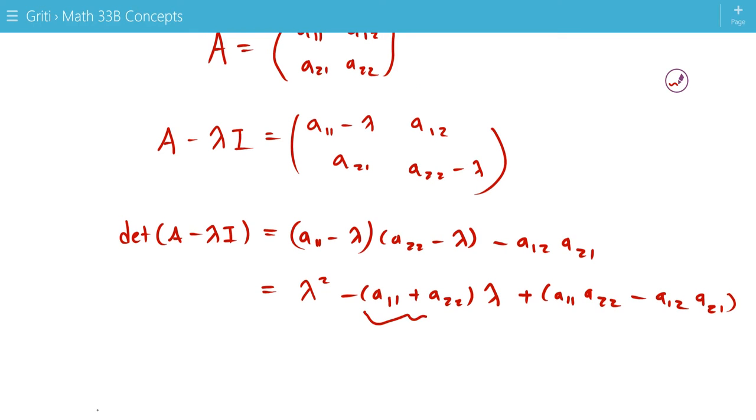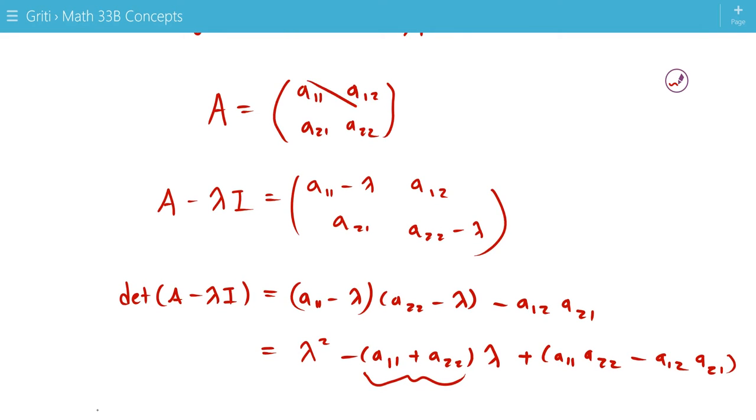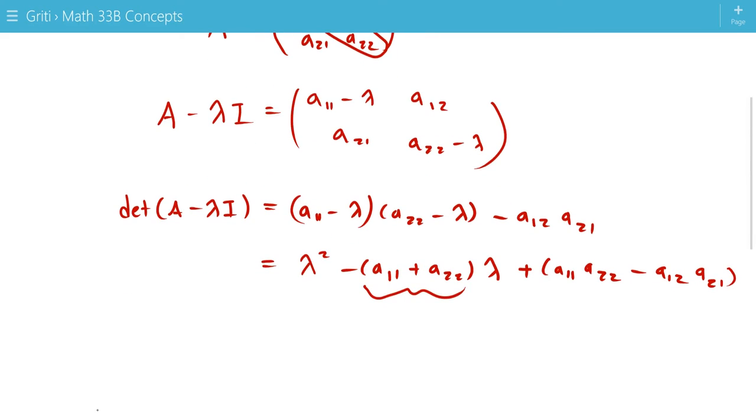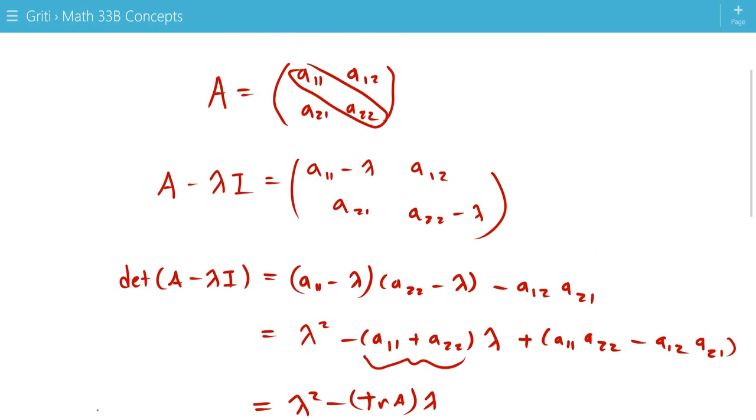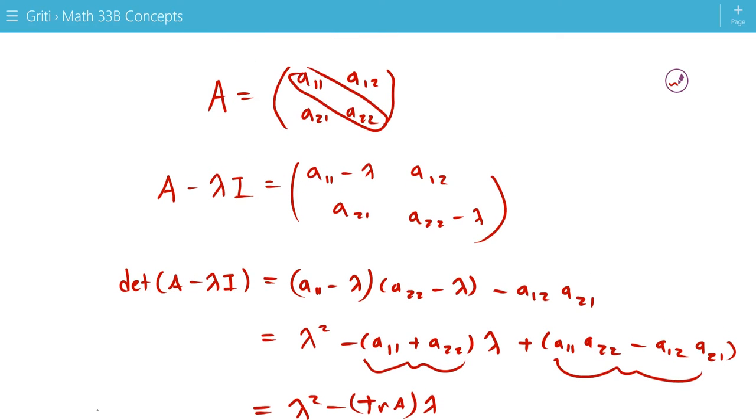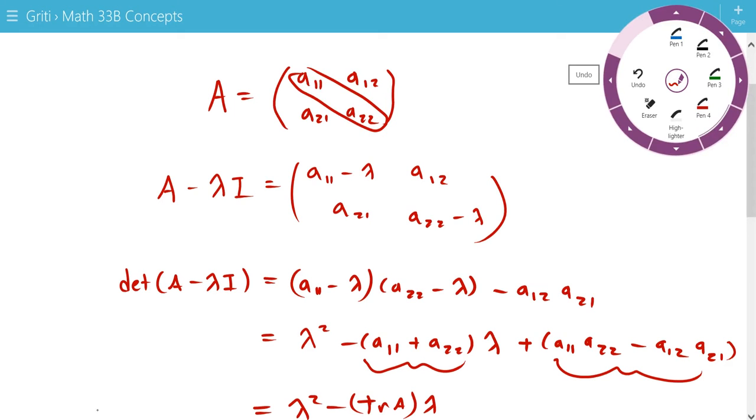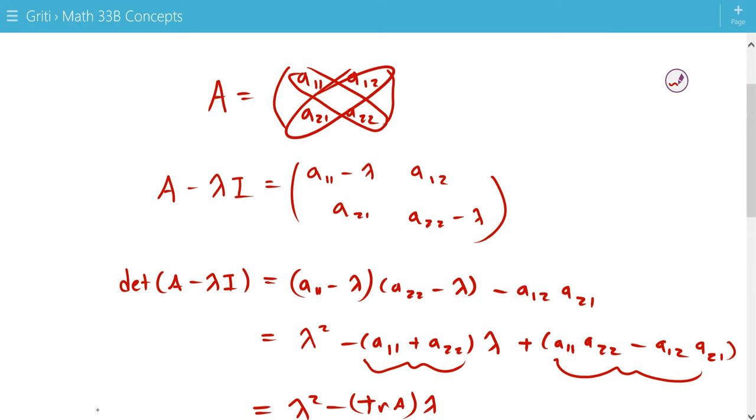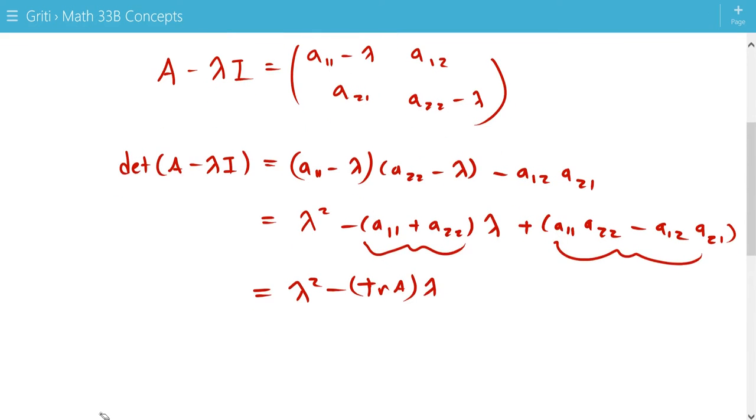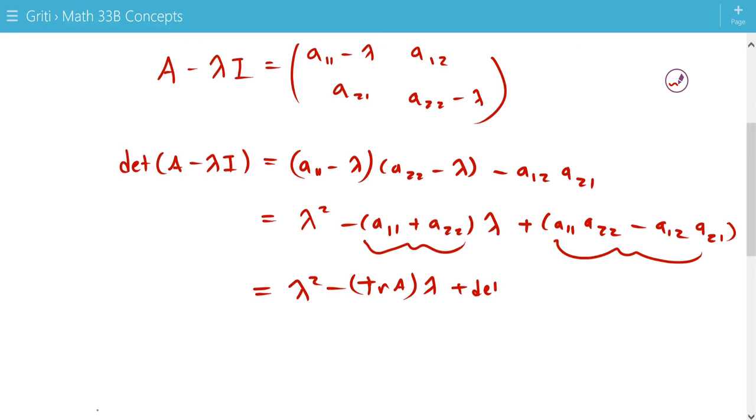So, if you notice, this is just the sum of the diagonal entries of A, and we call that the trace of A. And if you look closely, you'll see this is the determinant of A. These two entries multiplied minus these two entries multiplied. So, this is the determinant of A.